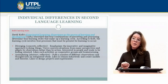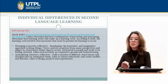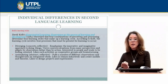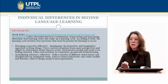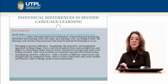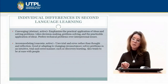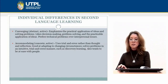David Kolb states that experience is the source of learning and development. Theorized in 1984, he makes four combinations of perceiving and processing — the four learning styles that make up a learning cycle. According to Kolb, the learning cycle involves four processes that must be present for learning to occur: diverging (concrete and reflective), assimilating (abstract and reflective), converging (abstract and active), and accommodating (concrete and active).